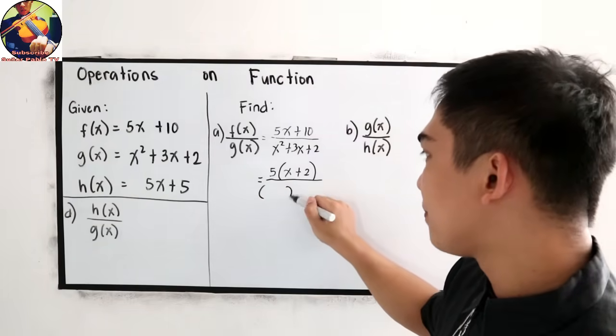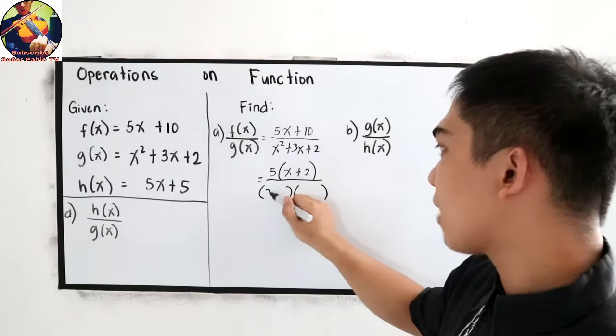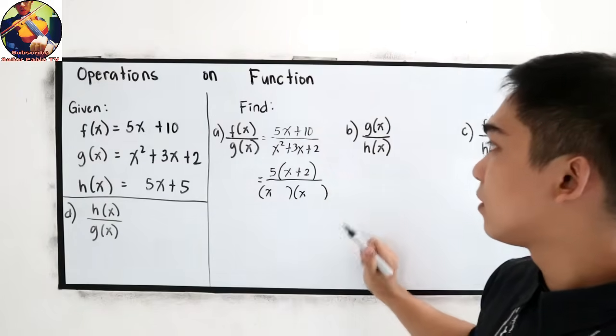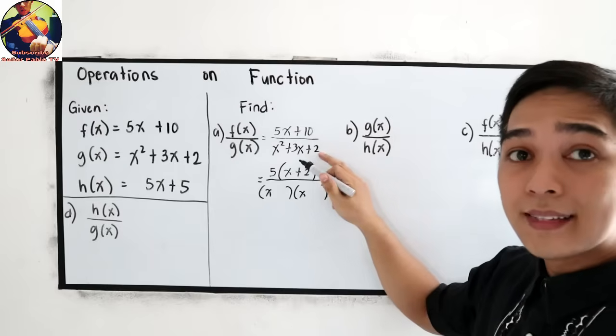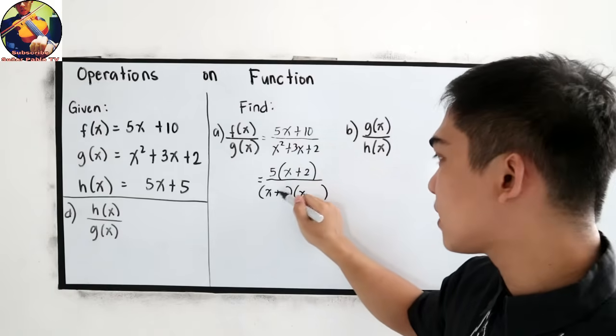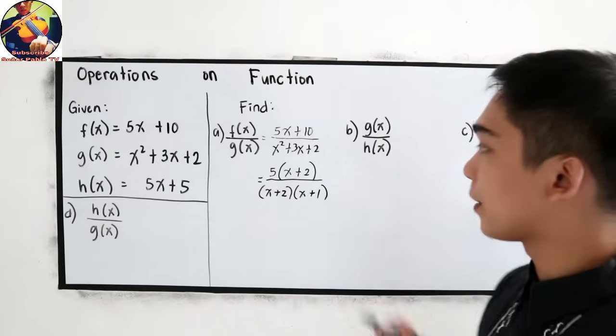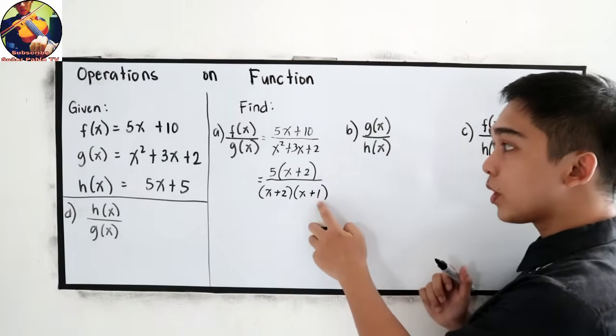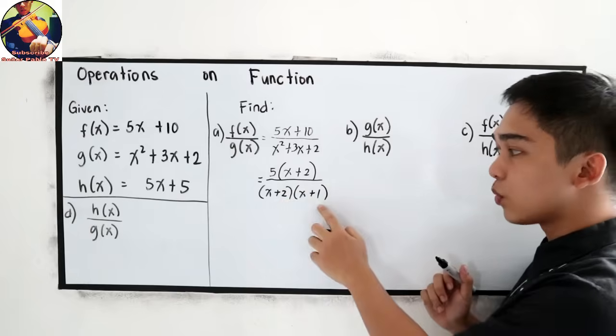Factors are x and x. Then factors of 2, where the sum must be 3. So plus 2 and plus 1. 2 times 1 is 2. 2 plus 1 is 3.